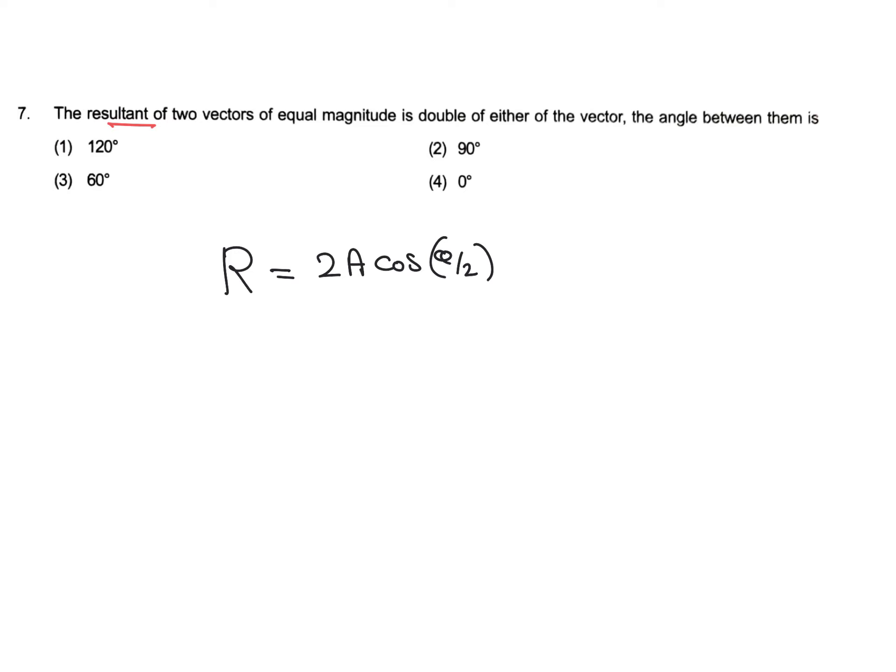So the value of 2a cos theta by 2 is equal to, it is given that magnitude is double of either of vectors. That means this is equal to 2a.